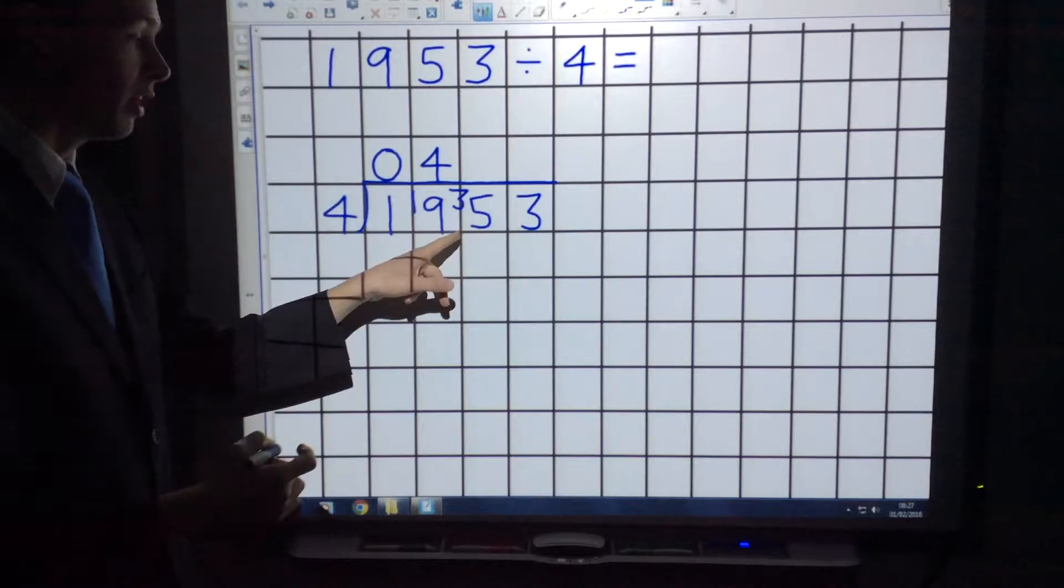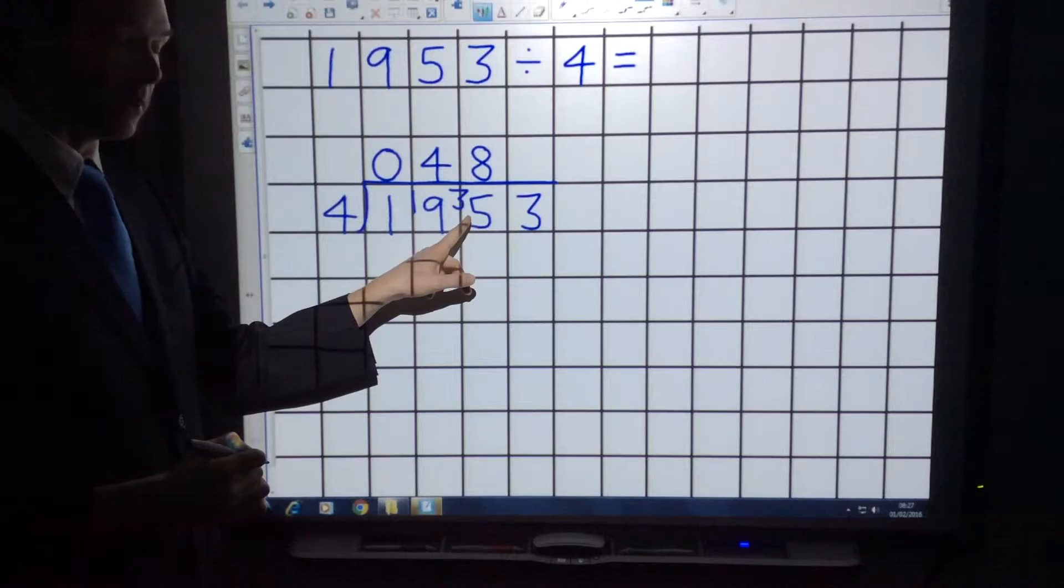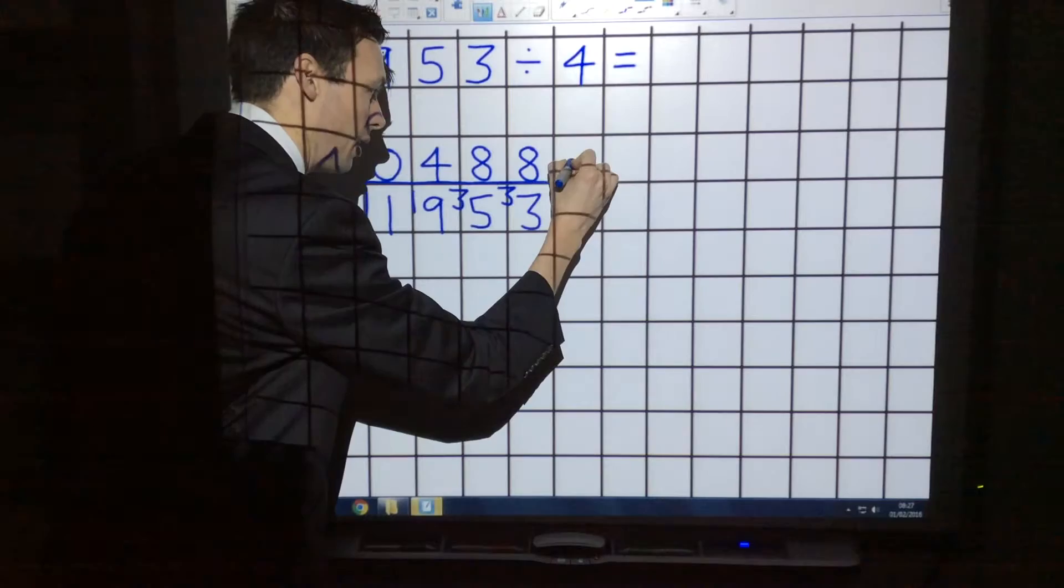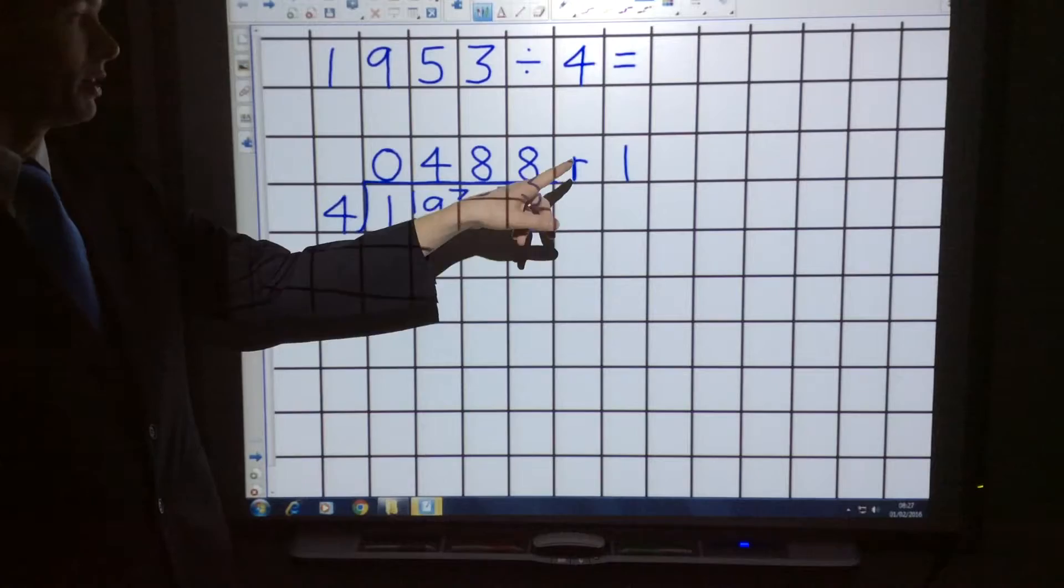How many times does four go into thirty-five? The answer is eight, because four times eight is thirty-two, and the remainder will be three again. Carry the remainder over. How many times does four go into thirty-three? The answer is eight, and the remainder is one.